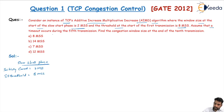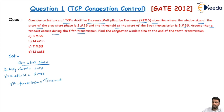Assume that there is a timeout occurring during the fifth transmission. A timeout indicates high congestion in the network. We will start with a new threshold, where the new threshold is equal to the current congestion window size divided by 2, and the restart begins from the slow start phase.